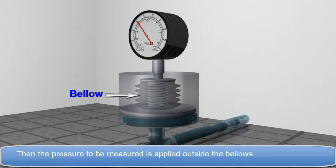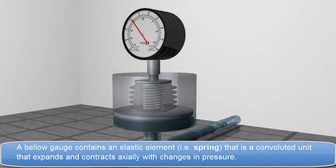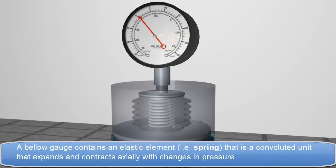Then the pressure to be measured is applied outside the bellows. A Bellow gauge contains an elastic element, that is a spring,